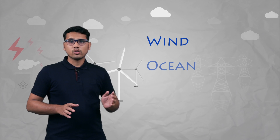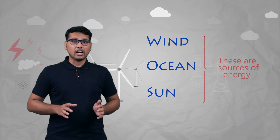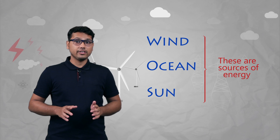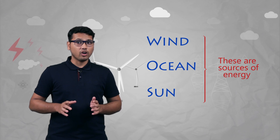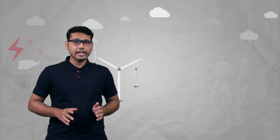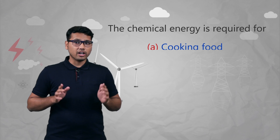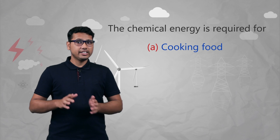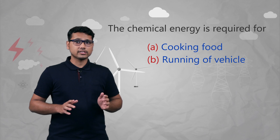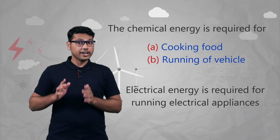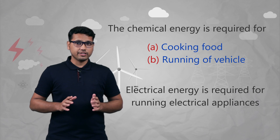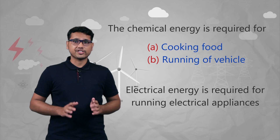So all these things — wind, ocean, and the sun — are sources of energy, and we need energy for all our daily needs. We need chemical energy for cooking our food, chemical energy for our vehicles, and electrical energy for running all our electrical appliances. So for all these requirements, we need a source that could fulfill our requirements.